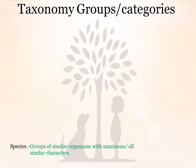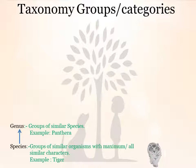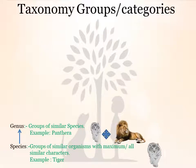Species is a group of similar organisms with maximum — or you can say all — similar characters. Example: tigers. Genus is a group of similar species having similar characters; they are studied in a group known as genus. Example: Panthera. In Panthera, tigers have characters similar to lions, so they are studied together under the genus Panthera.